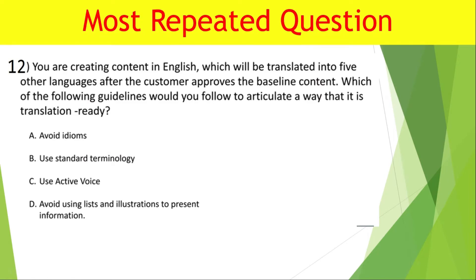Now coming to the next question. You are creating content in English which will be translated into 5 other languages. After the customer approves the baseline content, which of the following guidelines would you follow to articulate in a way that it is translation ready? Option A: Avoid idioms. Option B: Use standard terminology. Option C: Use active voice. Option D: Avoid using lists and illustrations to present information. The right answer will be A, B, C — you should avoid idioms, use standard terminology, and use active voice.